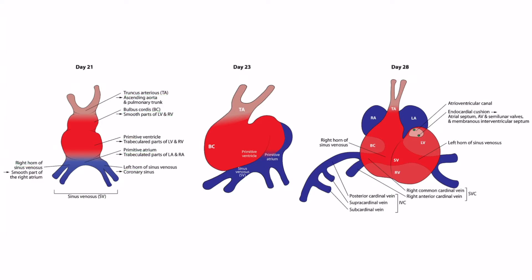A couple days later, around day 23, the heart begins to fold. The bulbus cordis has moved to the left side, and the primitive atrium has begun to move upward and somewhat posteriorly. By week four, the heart looks completely different with many important structures and beats spontaneously.